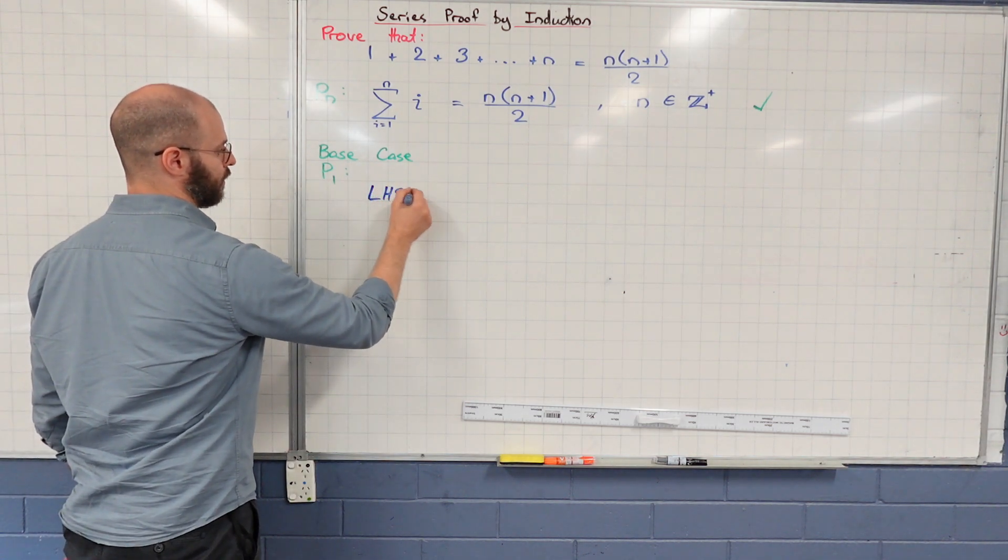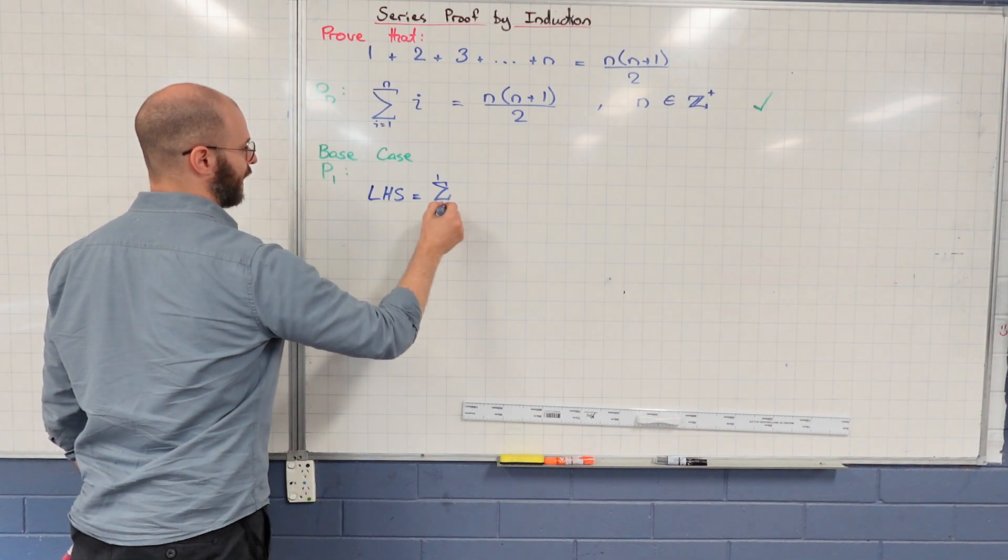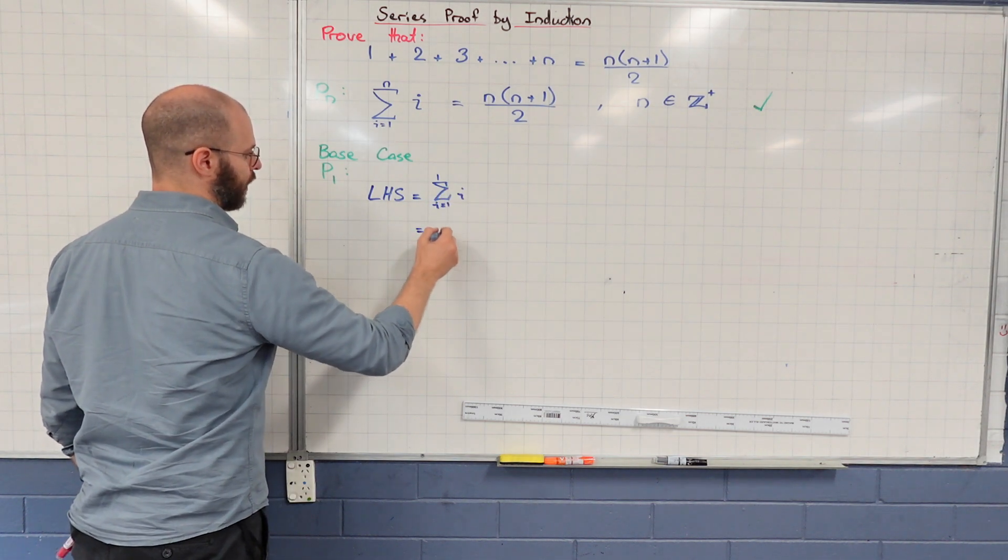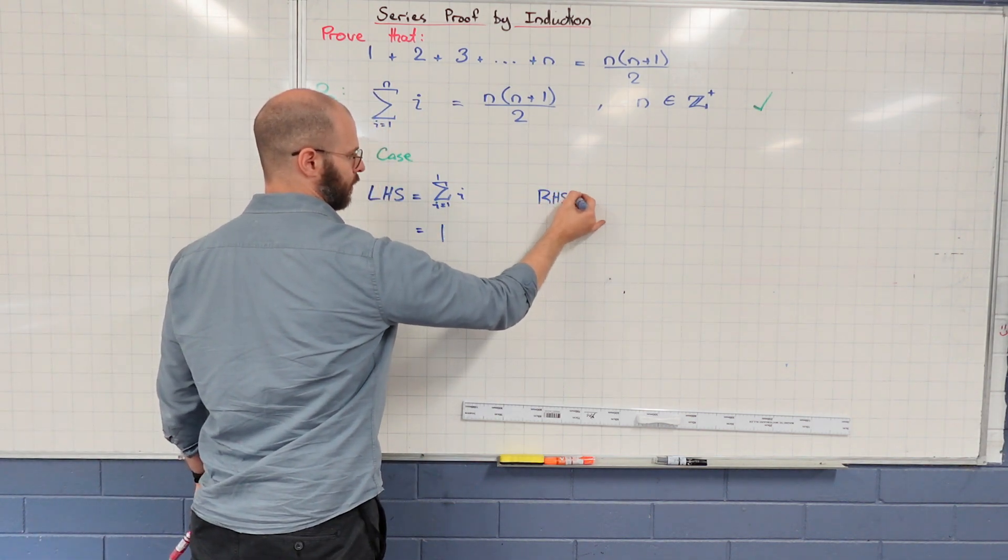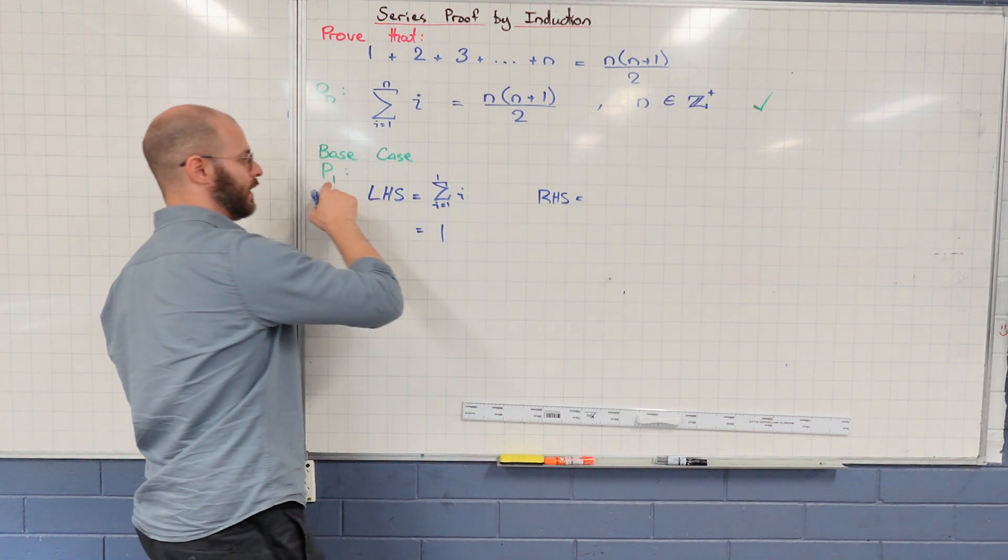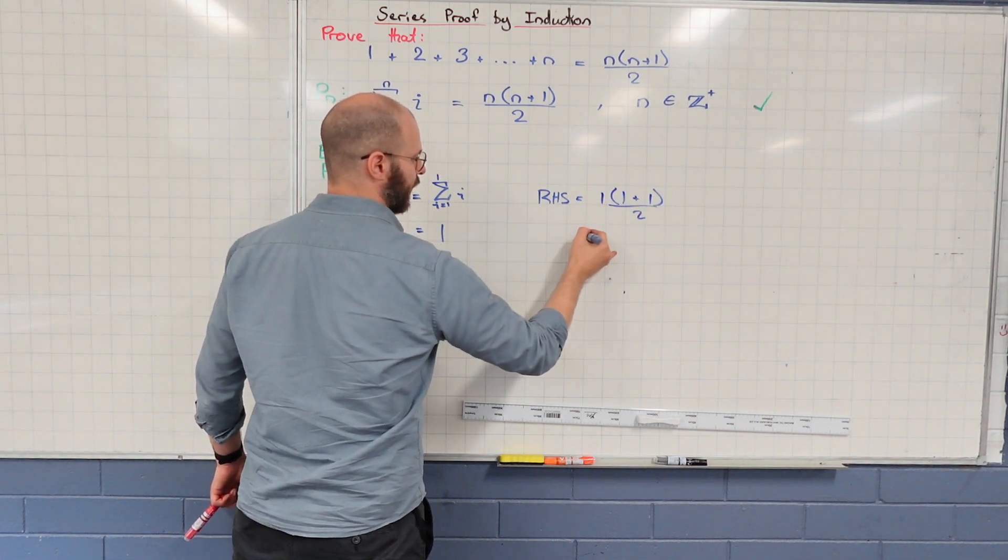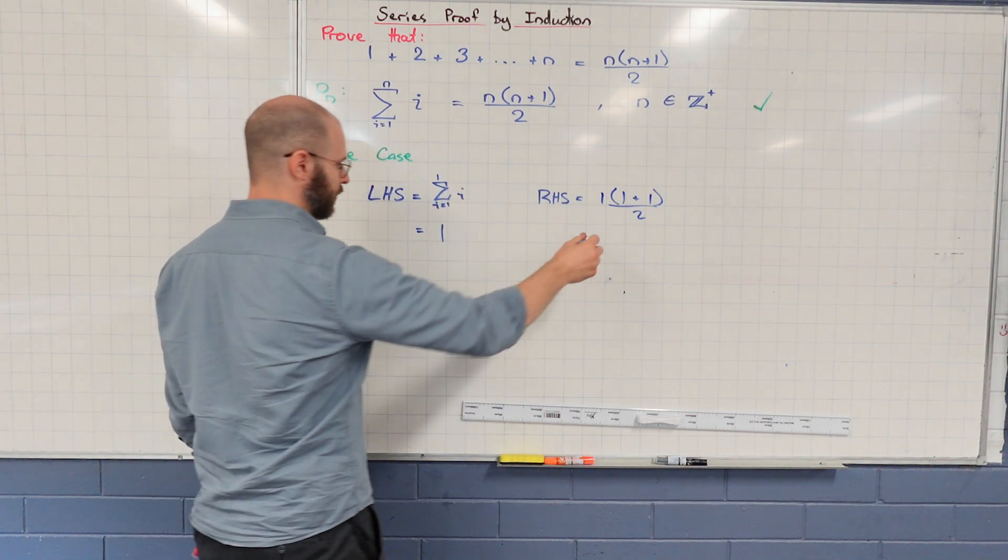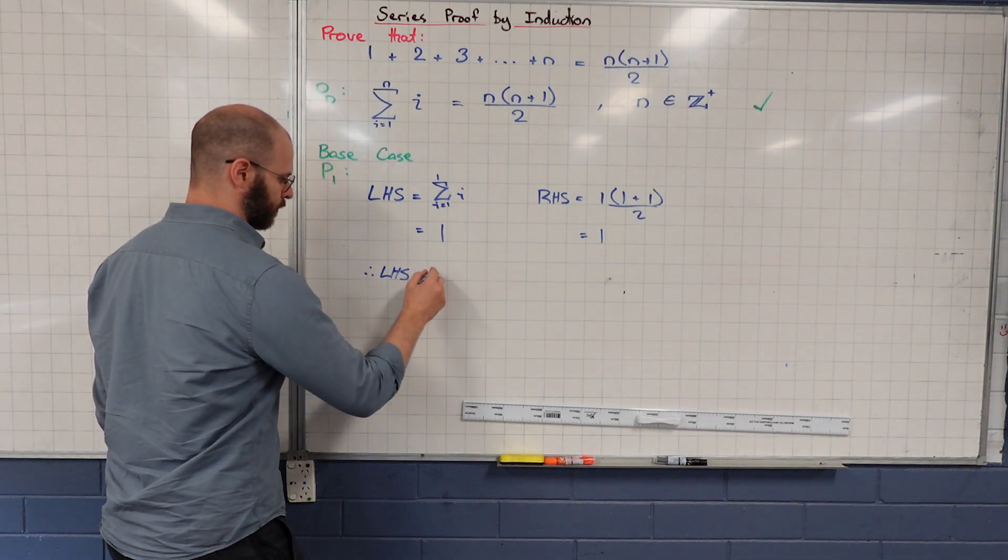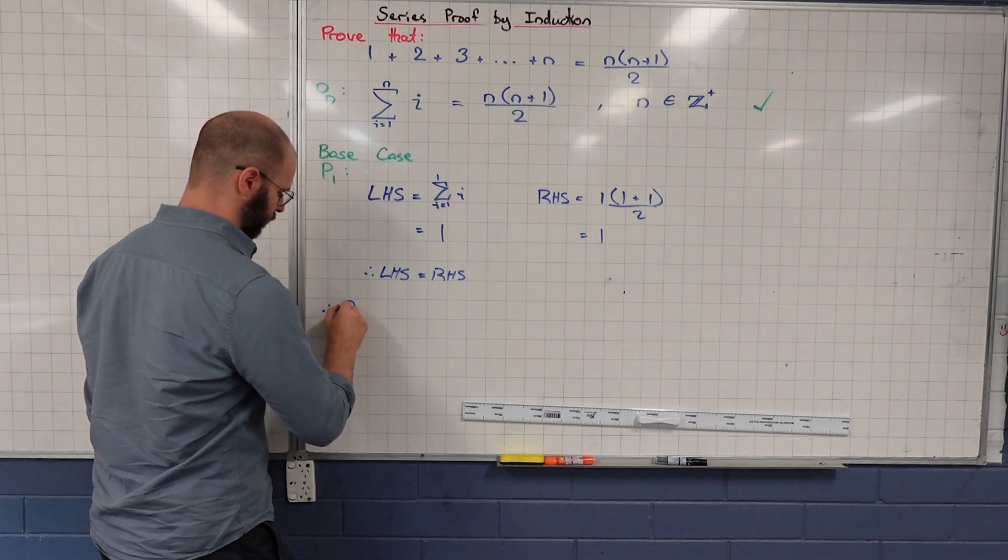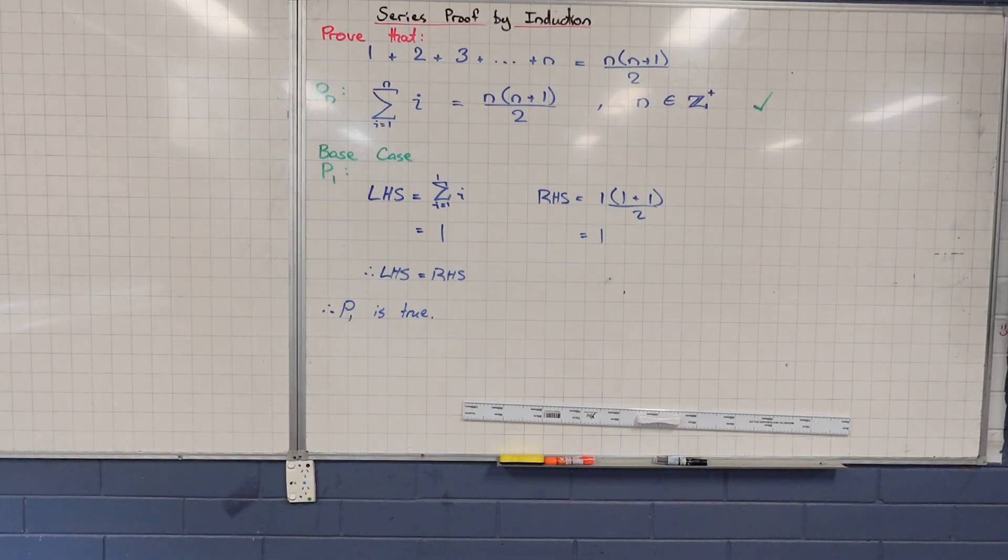So doing this, we have a left hand side, which is going to be sigma n is one starting at i equals one, i. Subbing in the value, it's just one. Or you could pull it from up there. For our right hand side, we're going to get, no need to state that n is one, it's already stated here. One, one plus one, all over two. And I'm not even going to worry about doing the individual steps, I'm just going to evaluate it as one. Therefore, left hand side is the same as right hand side and our base case is indeed true.